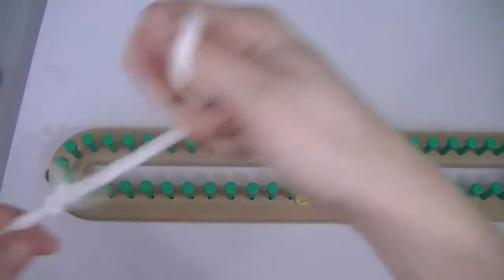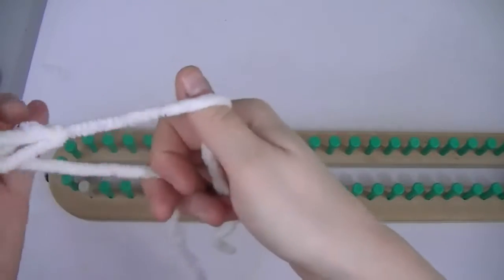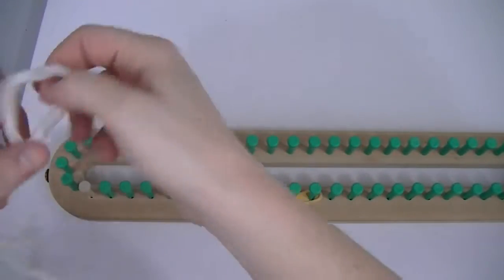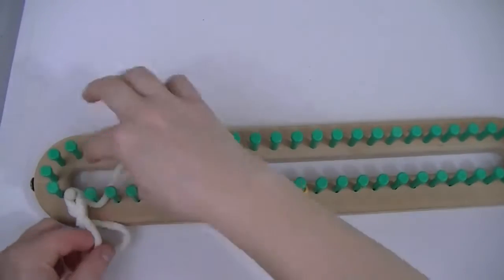Start with the slip knot going in the right direction. There we go. So do your chain cast on all 12 pegs.